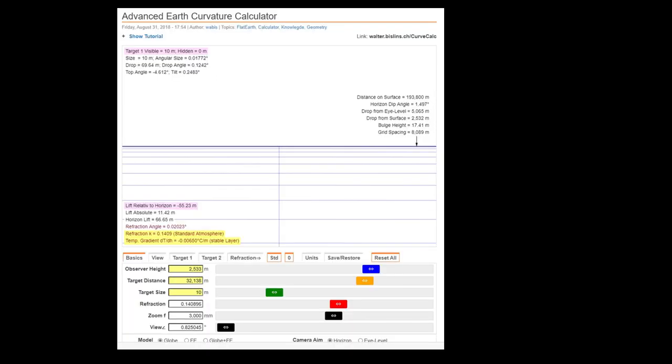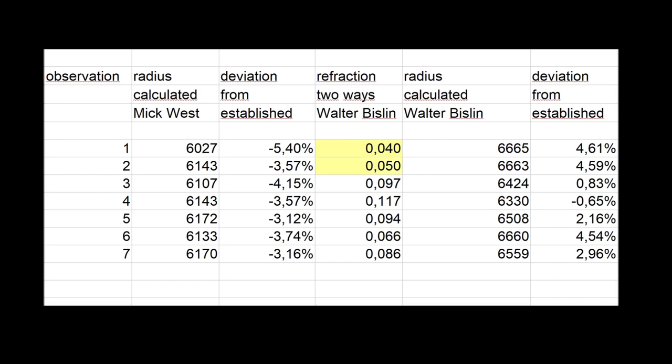A more accurate way is to use Walter Bisling's curve calculator. I calculated the refraction angle for the different observations from the observer height of 2533 meters for the different distances. This refraction angle works both ways, so it influences both zenith angles. This leads to a correction of the resulting angle between two verticals of 0.04, 0.05, 0.097, 0.117, 0.094, 0.066 and 0.086 degrees. Calculation of the radius in this way gives these results.